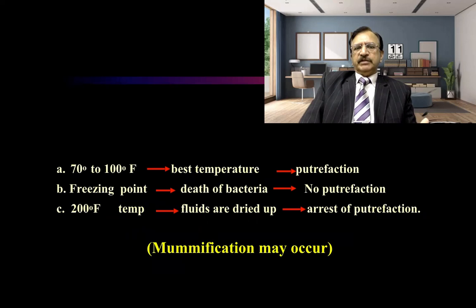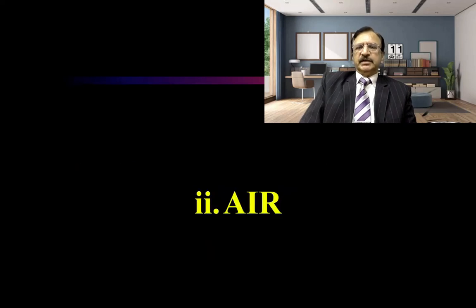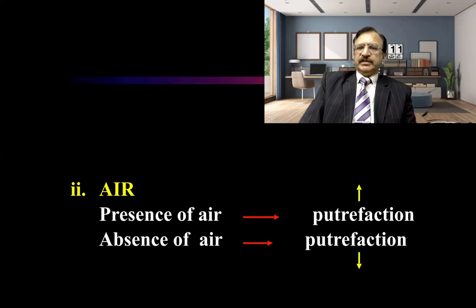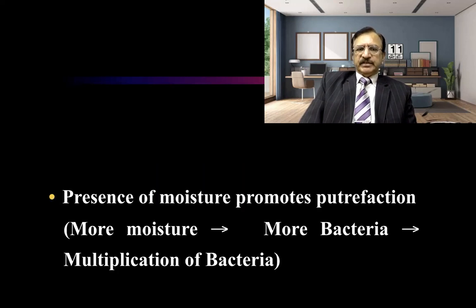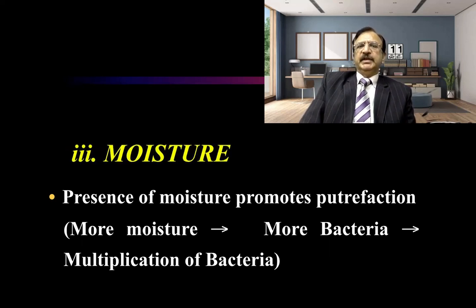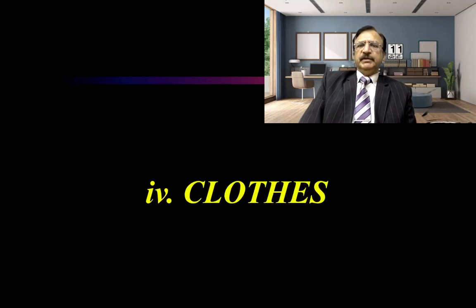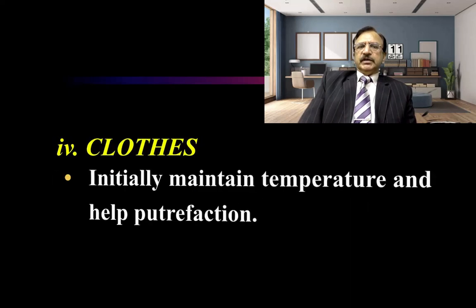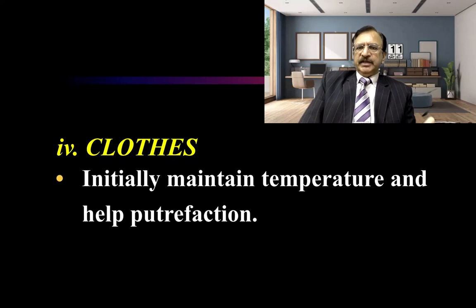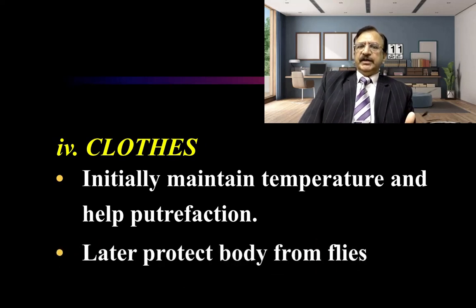At temperatures above 200 degrees Fahrenheit, the fluids dry up, putrefaction is arrested, and mummification takes place. Regarding air: the presence of air hastens putrefaction, while its absence retards it. The presence of moisture attracts bacteria — multiplication of bacteria occurs more effectively and the process of putrefaction is hastened. The presence of clothes initially helps putrefaction by maintaining temperature, but later protects the body from fly attack.